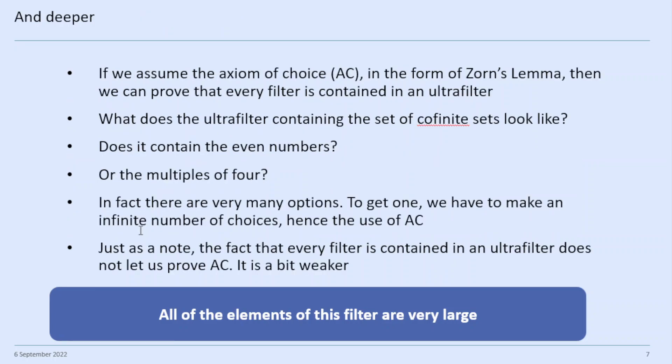But the rabbit hole goes deeper still. If we assume the axiom of choice in the form of Zorn's Lemma, then we can prove that every filter is contained in an ultrafilter. The axiom of choice is an axiom of set theory, and it took mathematicians a long time to realize it was a non-trivial assumption. It's about the ability to make an infinite number of choices all at the same time. Zorn's Lemma is about the properties of partially ordered sets, and it took me a long time to get used to it — it feels complicated.